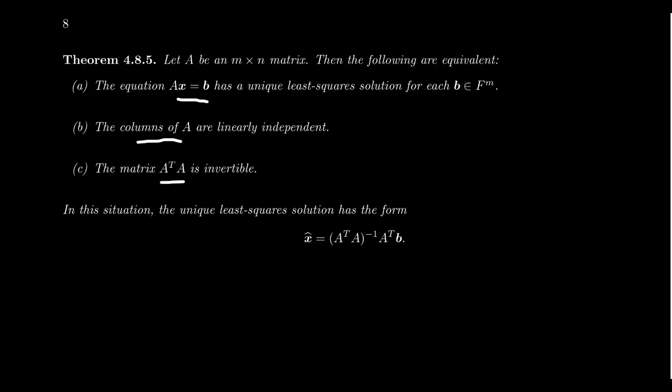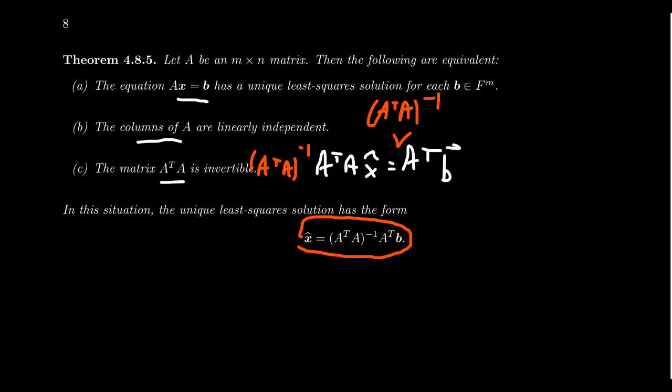Like we saw before on the first example, when A transpose A is invertible, so that is we have A transpose A X hat equals A transpose B. Well, if it's invertible, you can multiply on the left by both sides, A transpose A inverse. And so then you actually get that the least square solution is X hat equals A transpose A inverse A transpose B.